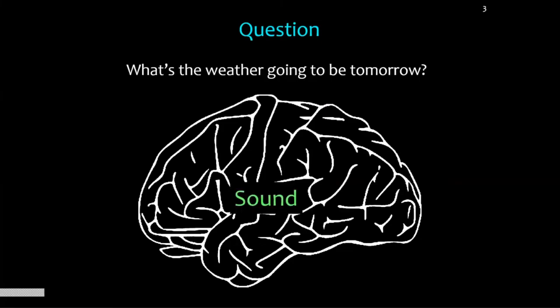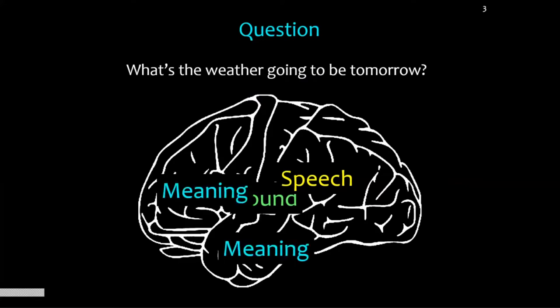Something just happened in your brain. I made the air wobble a bit and some sounds came out of my mouth. They were picked up by auditory cortex, which then realized that they were speech, and tried to figure out the meaning. It figured out I was asking something about weather and time and this thing called tomorrow. And then you decided to give an answer, took an action, and told me what it was going to be. All this amazing stuff happened inside your head — and the sad truth is that we as the human race don't really understand all that much of that. We couldn't build it.